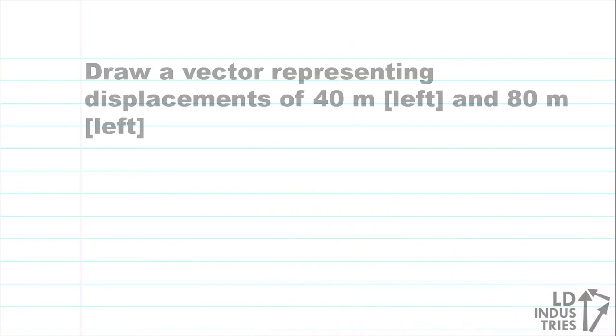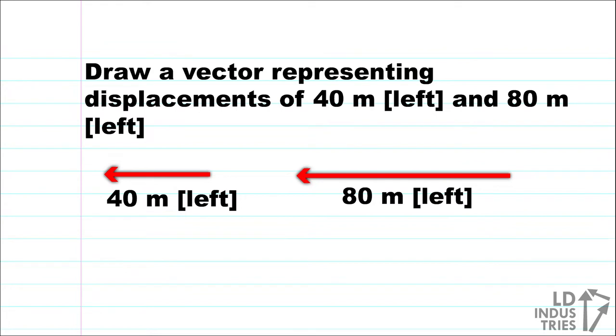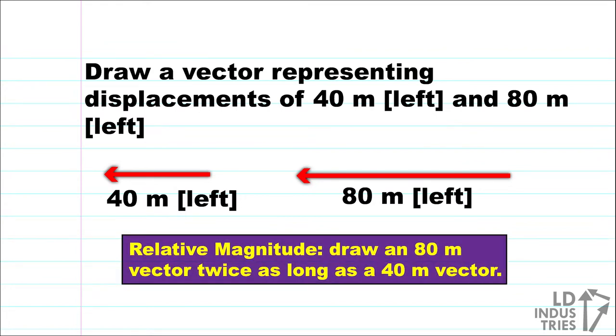Here's a quick example. Let's say you wanted to draw a vector representing displacements of 40 meters left and 80 meters left. Your first vector is just an arrow pointing left that you label with 40 meters. But one thing we want to do with any vector diagram is to draw the vectors to the proper relative magnitude. This means that even though we don't actually draw a vector that is literally 40 meters and another one that's 80 meters long on our paper, we are going to make the diagram of the 80 meter long vector about twice as long as the 40 meter vector. This keeps a nice relative magnitude.